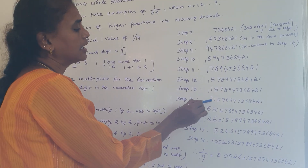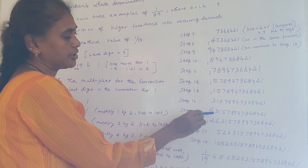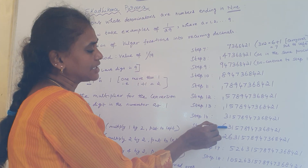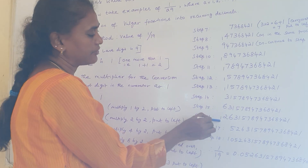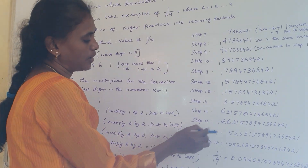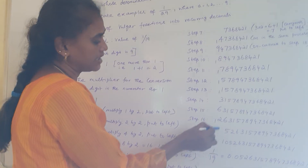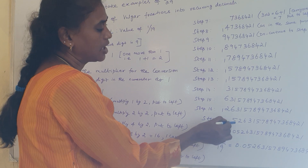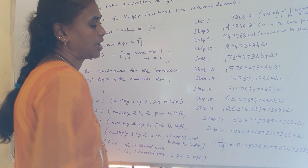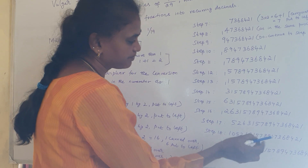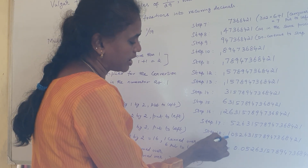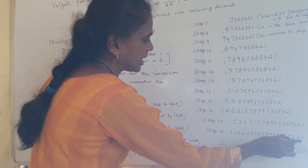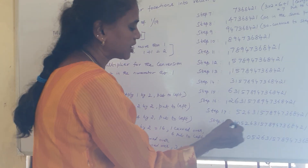In step 15, 3 times 2 is 6, no carry. In step 16, 6 times 2 is 12 — put 2 to the left and 1 is carried over. In step 17, 2 times 2 is 4, plus 1 is 5. In step 18, 5 times 2 is 10. When you observe here, the same values and the same numbers in the same order continue — so we stop at this point.